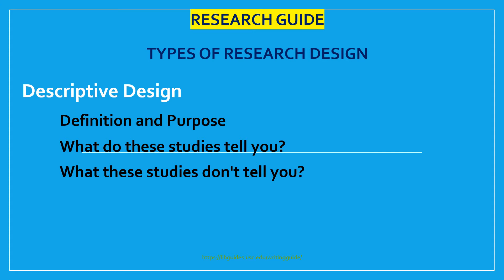The next type, and most commonly used, is descriptive design. Descriptive research design helps provide answers to the questions of who, what, when, where, and how associated with a particular research problem. A descriptive study cannot conclusively assert answers to 'why.' Descriptive research is used to obtain information concerning the current status of phenomena and to describe what exists with respect to variables or conditions in a situation.